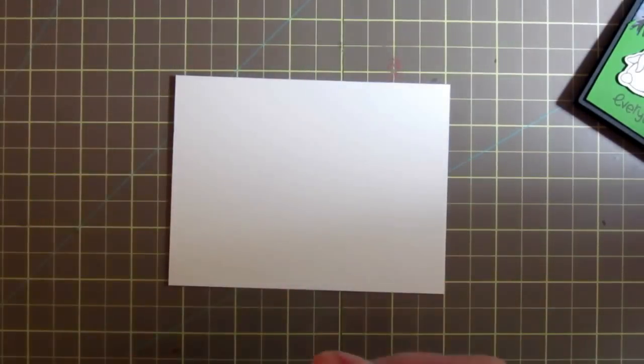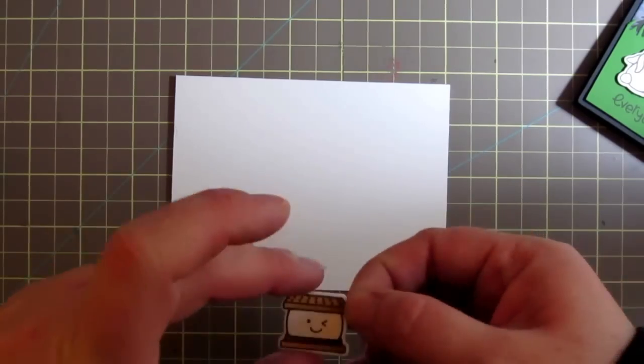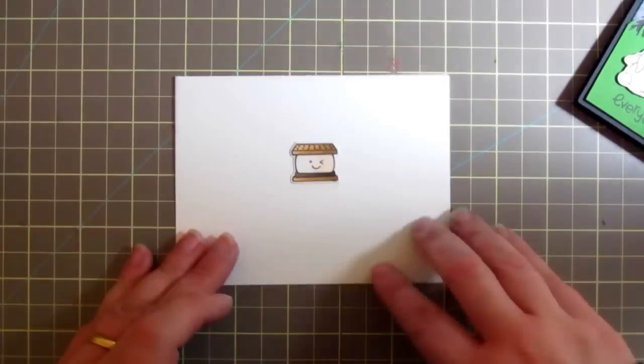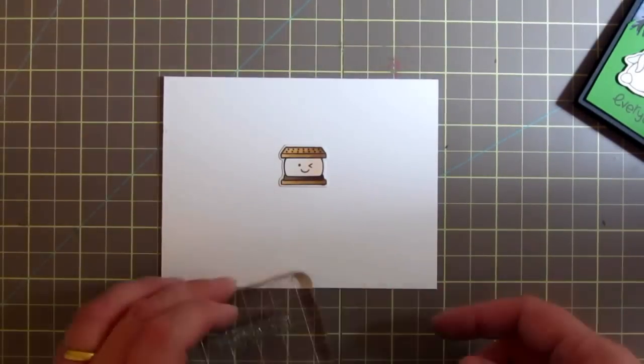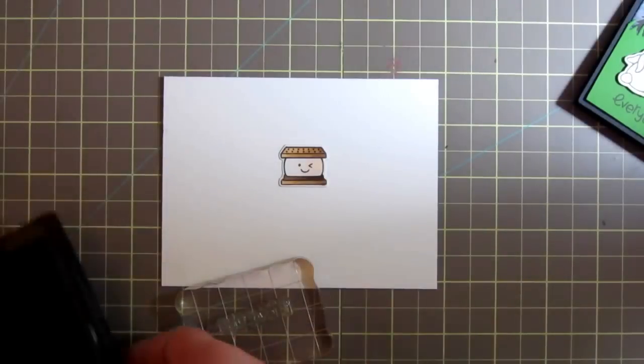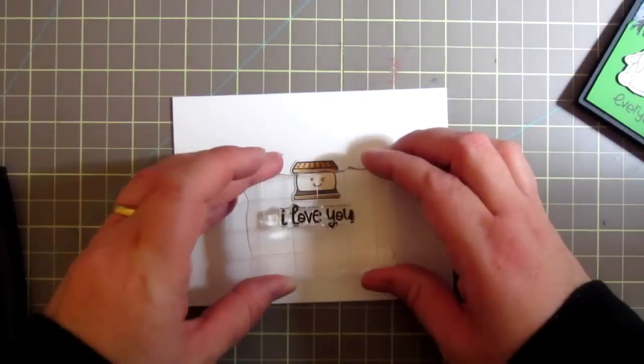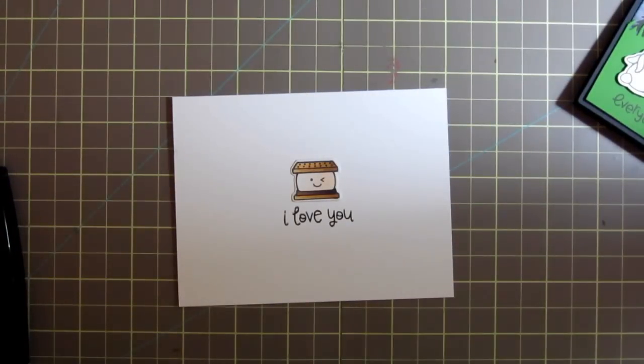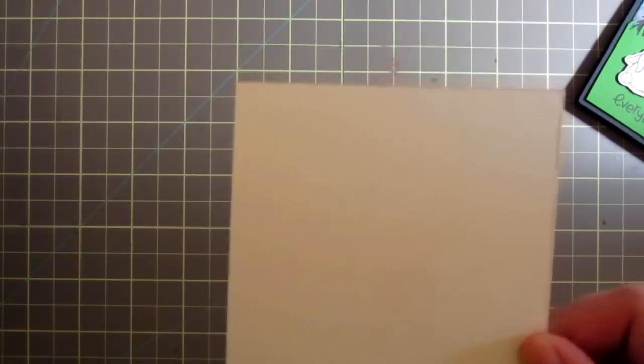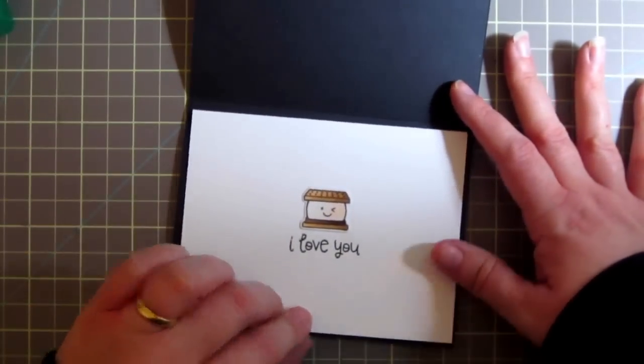But I didn't want to waste the s'more image, so I decided to add it to the inside of my card. I took a white panel and cut it down to 4 by 5 1/4 so it would fit inside the card with a small border. I just glued that s'more image right down in the center, and then I grabbed the 'I love you' sentiment from the Love You S'more stamp set and I just stamped that right below the image there. Then I just grabbed some Tombow Mono Multi to go ahead and adhere that to the inside of my card.